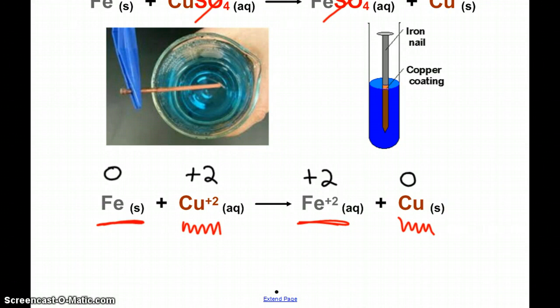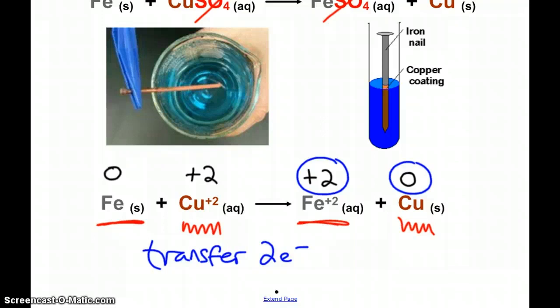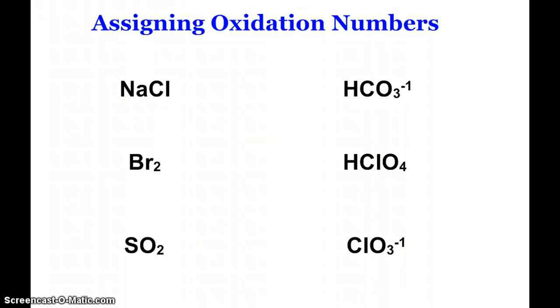Ultimately what we see here is the fact that iron lost two electrons because it went to a plus two charge. And copper gained two electrons because it went from being plus two down to zero. And ultimately then there was a transfer of two electrons in this process. And we will break this down into half reactions and other things in a minute. But that's at the heart and soul of these redox reactions that we're going to see a transfer of electrons from one species to another.